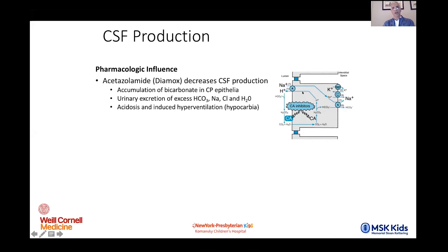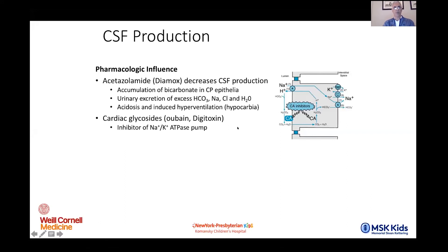If you can alter the bicarbonate balance across the choroid plexus epithelium — specifically the production of protons and carbonic acid — you can actually influence fluid production, because fluid won't migrate through the cell given the imposed electrolyte imbalance. This is the mechanism of acetazolamide, which is the only pharmacologic manipulation actively used on a day-to-day basis to decrease CSF production. It doesn't shut it off entirely. We use it as a temporizing measure — while someone awaits surgery or a reversible process takes hold. Long-term use carries the risk of metabolic acidosis.